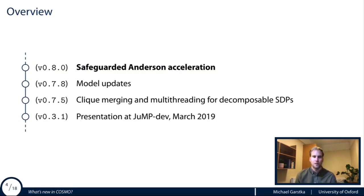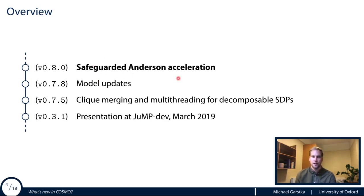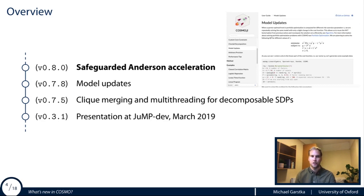Looking at the git log of our repository since I presented the solver two years ago, the main upgrades we've done are: clique merging and multi-threading for decomposable SDPs, efficient model updates, and safeguarded Anderson acceleration to improve convergence. In this presentation I want to talk about the Anderson acceleration and clique merging. If you're interested in model updates, I encourage you to take a look at the documentation.